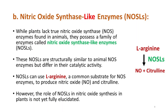The second enzymatic pathway involves nitric oxide synthase-like enzymes. While plants lack true nitric oxide synthase enzymes found in animals, they possess a family of enzymes called nitric oxide synthase-like enzymes. These are structurally similar to animal nitric oxide synthase enzymes but differ in their catalytic activity. Nitric oxide synthase-like enzymes can use L-arginine, a common substrate for nitric oxide synthase enzymes, to produce nitric oxide and citrulline. However, the role of NOS-like enzymes in nitric oxide synthesis in plants is not yet fully elucidated.